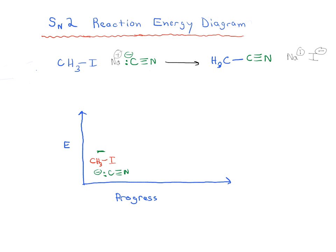And when they're infinitely far apart in space, and as they start coming closer and closer together, what's going to start happening is we're going to have a partial bond between our carbon of our cyanide and the carbon of our CH3I.